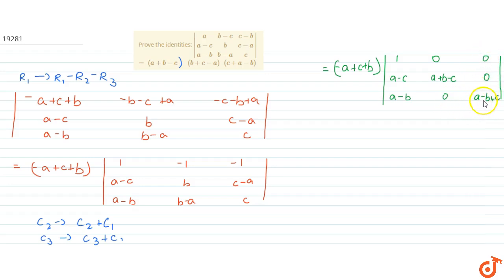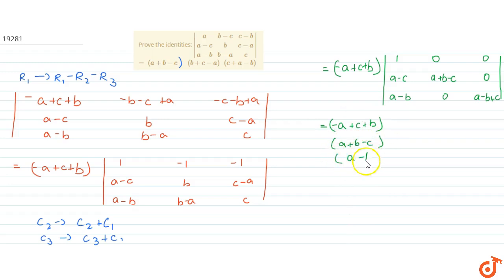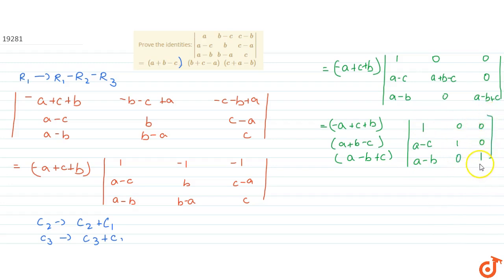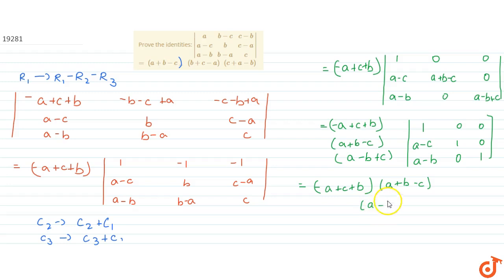Taking out the common term (a+b-c) and (a-b+c) from their respective rows, we get -(a+b+c) multiplied by (a+b-c) multiplied by (a-b+c). The remaining determinant evaluates to 1, since the diagonal entries simplify accordingly.